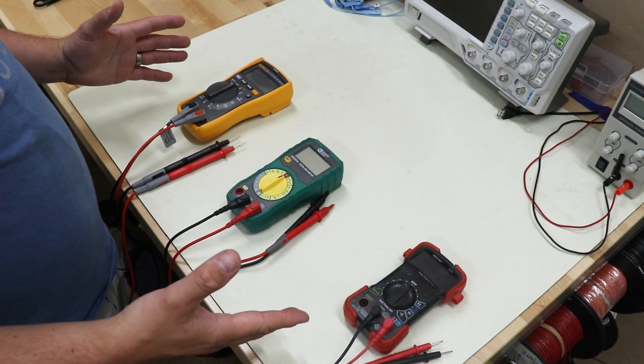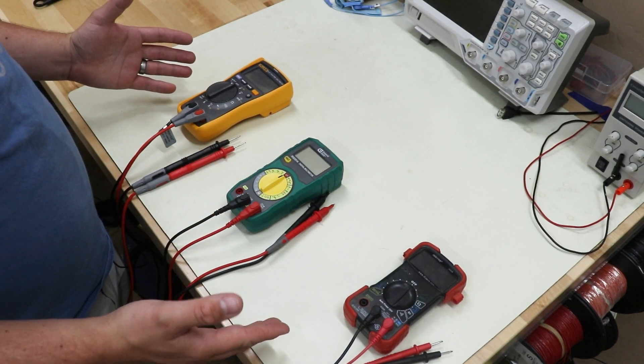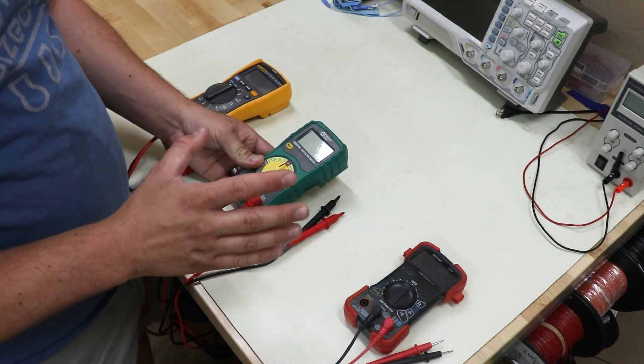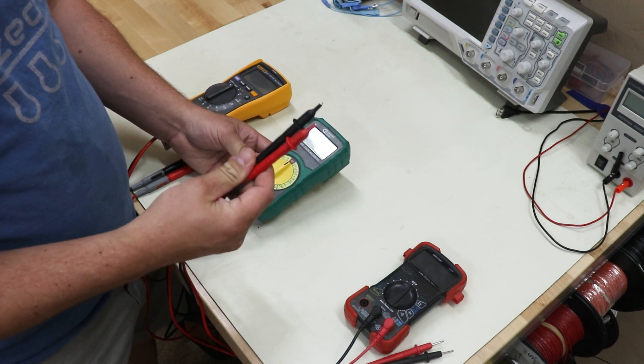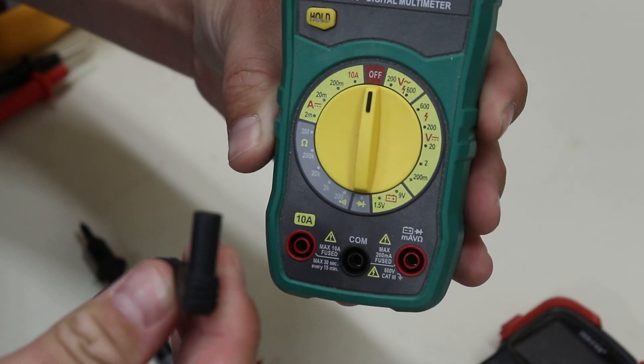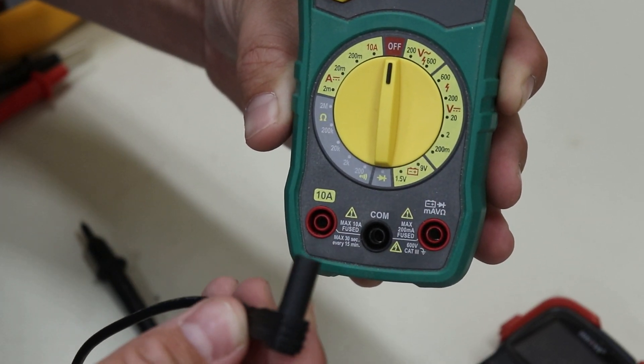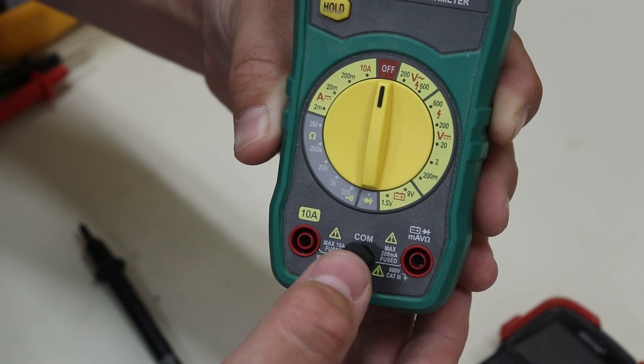Here I've laid out three different multimeters that range in quality and price. No matter what kind of multimeter you have, all of them are going to have similar features. They're all going to have a display, a dial, and a set of probes that are usually red and black. The black probe, which is sometimes called the common probe, will go into the black slot labeled COM.